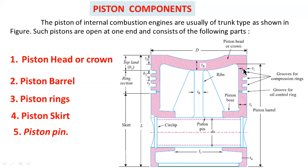In the ring section, t1 is the thickness of the groove, b2 is the gap between two successive rings, and t2 is the axial height of the piston ring. The piston pin, also known as gudgeon pin or wrist pin, is the horizontal rod used to connect the piston to the connecting rod — specifically, the small end of the connecting rod is connected to the piston via the piston pin.